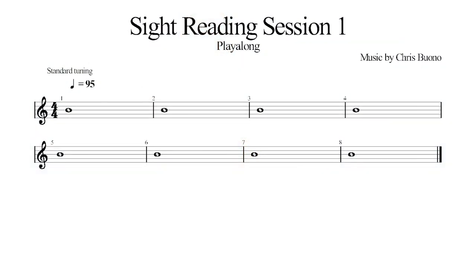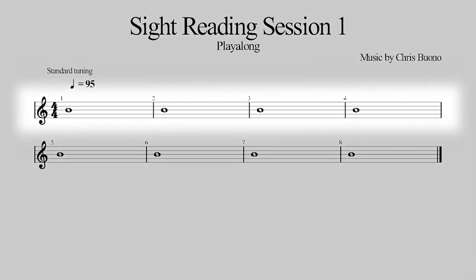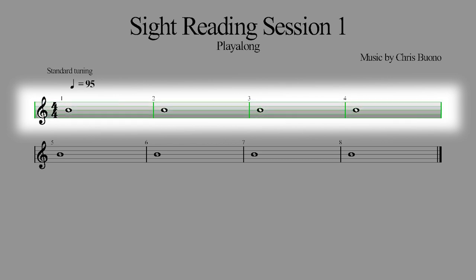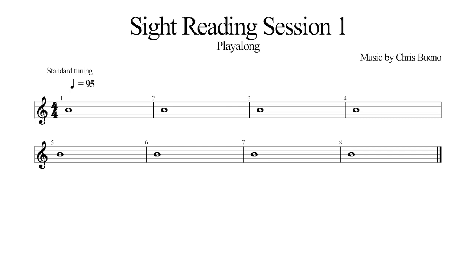The basic elements on the paper start at the left side of a horizontal element called a staff. That staff is made up of five lines that create four spaces. To the very left of that, you will always see a clef sign. That clef sign puts the notes on that staff in a certain range. We will always see what's called the treble clef, also known as the G clef.